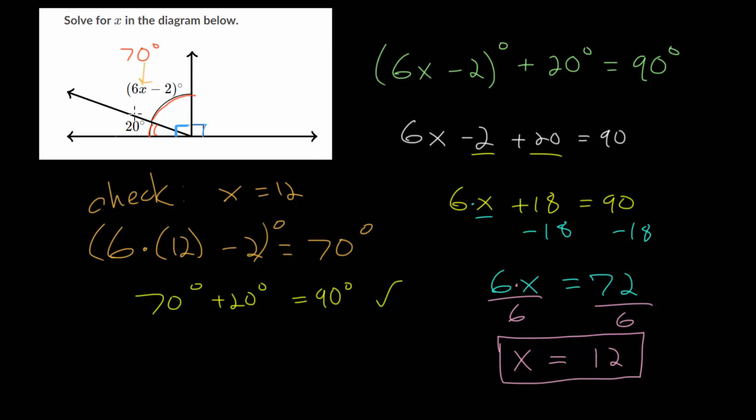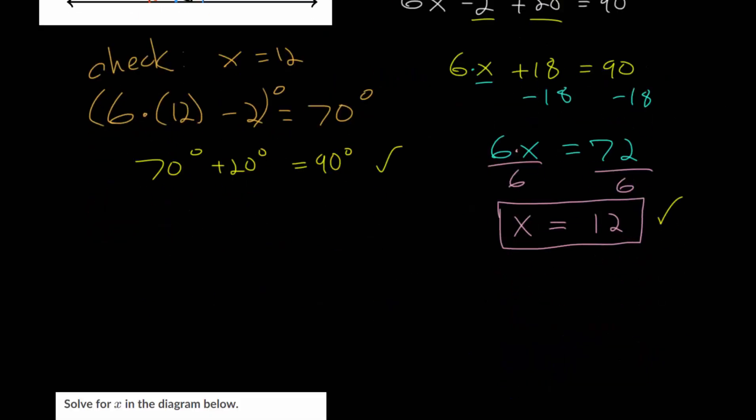And because these are complementary, because we plugged it back in, and it did work, we can feel confident that x does in fact equal 12. So let's look at one more of these. And with this example, we have this straight line broken into three different angles. But remember, when you have a line, the angles that form that line add up to 180 degrees. So since the angle of a line is 180, we can just add these three together and set up an equation and set that equal to 180.